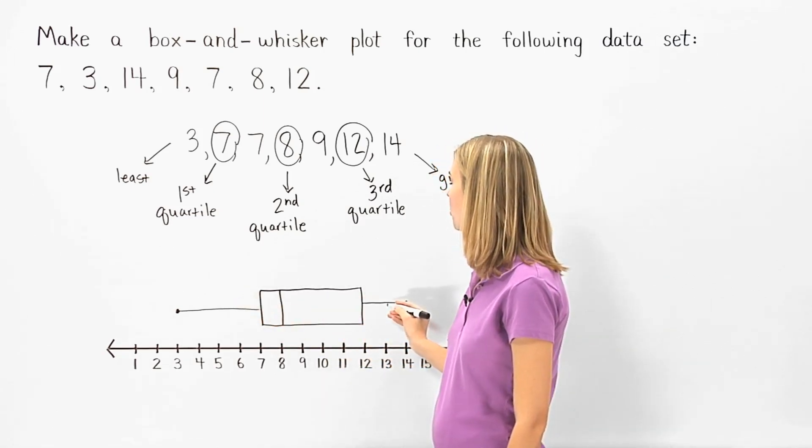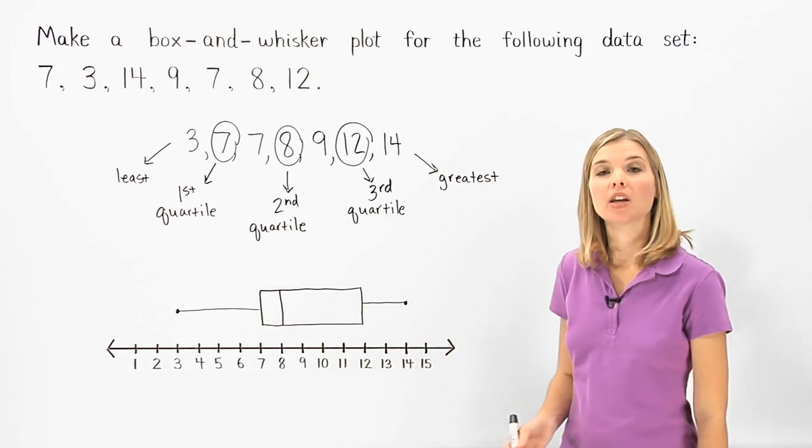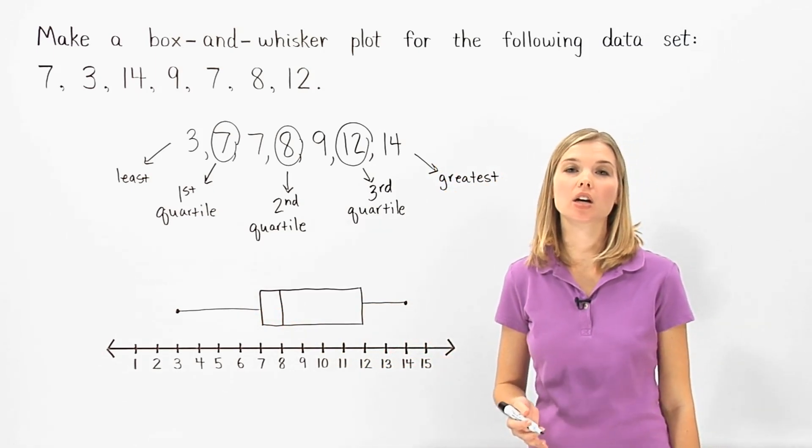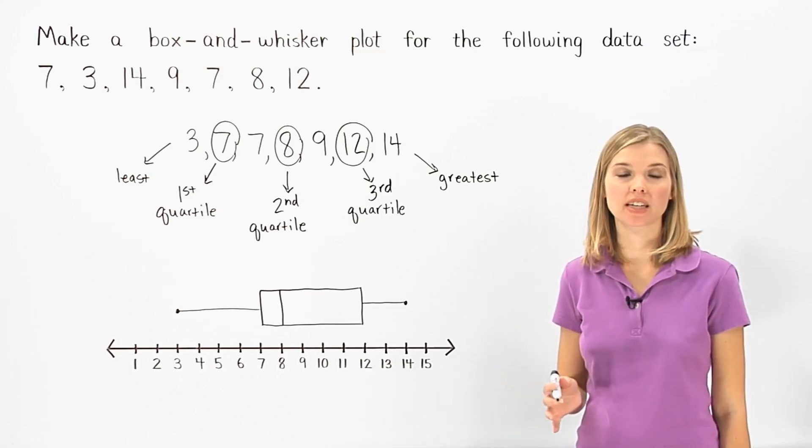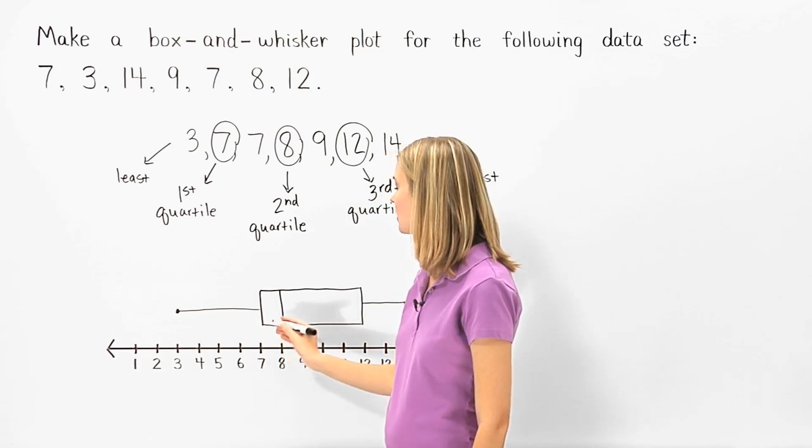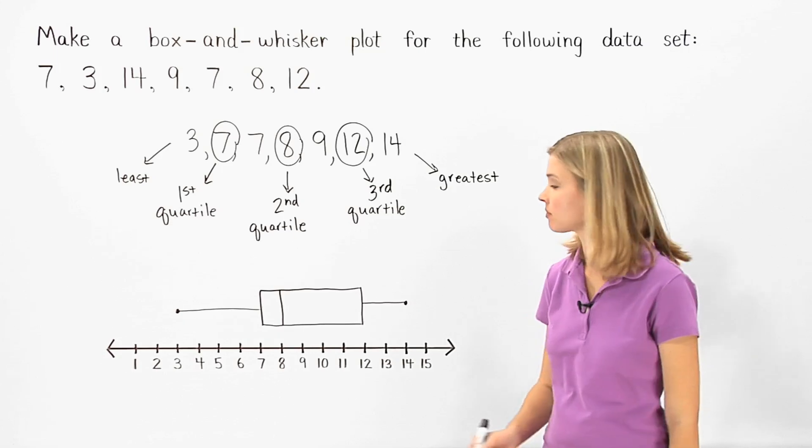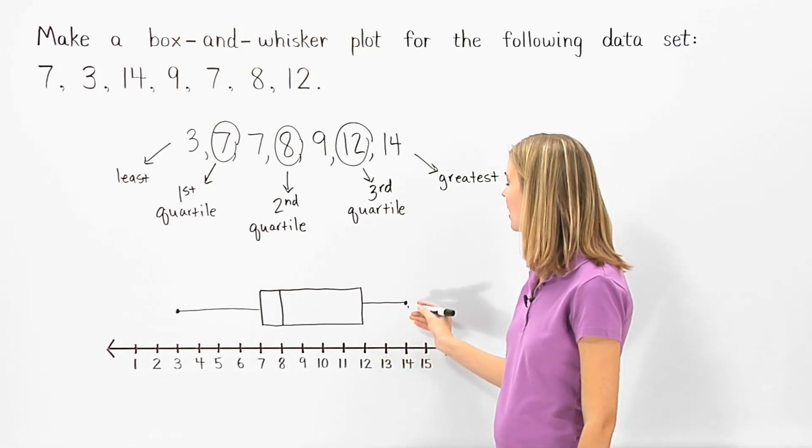These line segments are called the whiskers, and we have our box and whisker plot. Notice that a box and whisker plot is a good way to get an overall picture of the data set. We have our least number, the first quartile, the second quartile or overall median of the data set, the third quartile, and the greatest number.